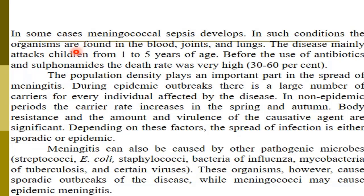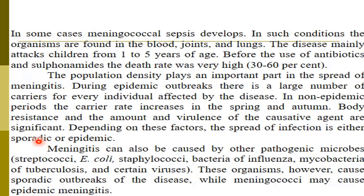In such conditions, the organisms are found in the blood, joints, and lungs. The disease mainly attacks children from one to five years of age. Before the use of antibiotics and sulfonamides, the death rate was very high — reaching up to 60%. Population density plays an important part in the spread of meningitis. The carrier rate increases in spring and autumn during non-epidemic periods.